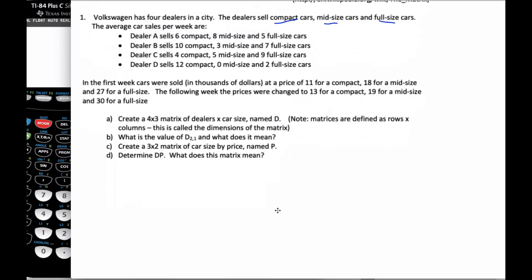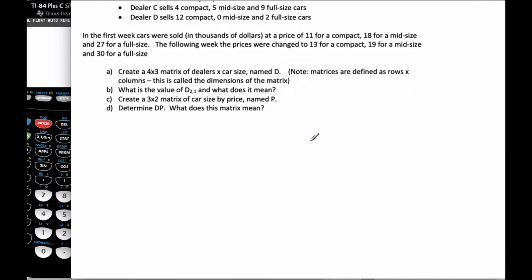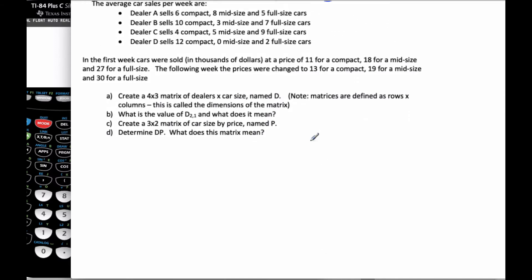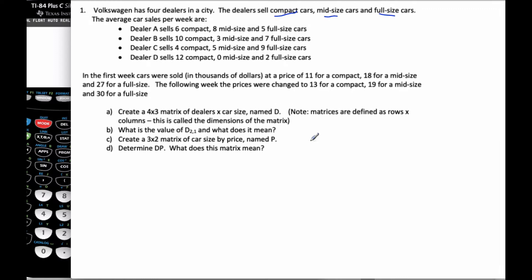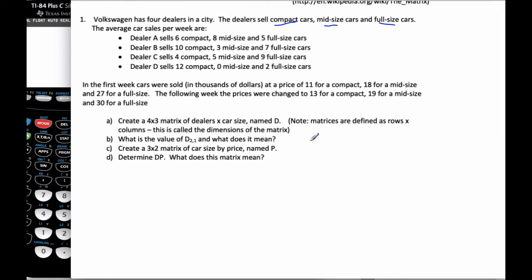So now we want to look at part A. Create a four-by-three matrix of dealers by car size and name it D. Matrices are formed by rows by columns. Rows go this way, and columns go this way. You'll see me in class using my hands going horizontally and vertically to always get it straight in my mind.